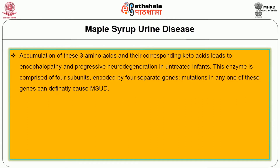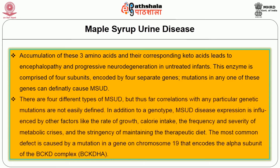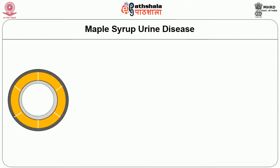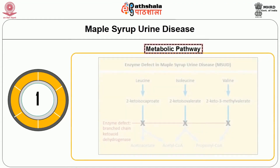The BCKD enzyme is comprised of four subunits encoded by four separate genes; mutations in any one can cause MSUD. There are four different types of MSUD, but correlations with particular genetic mutations are not easily defined. Disease expression is influenced by factors like rate of growth, calorie intake, frequency and severity of metabolic crises, and stringency of maintaining the therapeutic diet. The most common form is caused by a mutation in a gene on chromosome 19 encoding the alpha subunit of the BCKD complex. This diagram shows the metabolic pathway involved in MSUD.